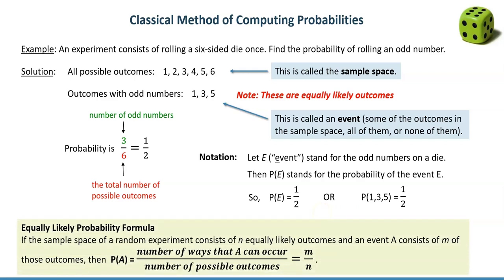Here's the definition for the probability formula when we deal with equally likely outcomes. This formula says that if outcomes are equally likely and we want to find the probability of an event A, then we take the number of ways that A can occur and divide that by the number of possible outcomes. However, not all outcomes are equally likely.